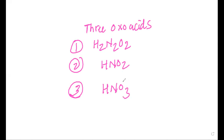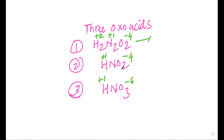Now if we calculate the oxidation state: for H2N2O2, oxygen contributes minus 4, hydrogen gives plus 2, so 2 nitrogen atoms have minus 2, meaning one nitrogen has plus 1. For HNO2, the oxidation state of nitrogen is plus 3. For HNO3, minus 6 plus 1 gives minus 5, so we need plus 5 for nitrogen. You can now easily write the oxidation states for these various oxoacids.